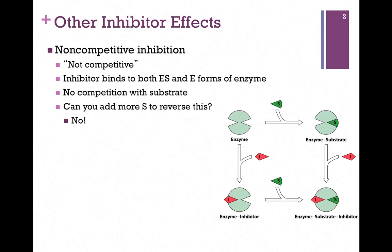That's illustrated in our figure here. On the upper left, we have the free form of the enzyme. It might bind to the inhibitor first, but because it's binding at a different site, the substrate can still bind to the active site, giving us the enzyme-substrate-inhibitor complex. Conversely, we could bind the substrate first, but that would not prevent the inhibitor from binding. So we can't simply add more substrate to make the reaction go, as we could in the case of competitive inhibition.